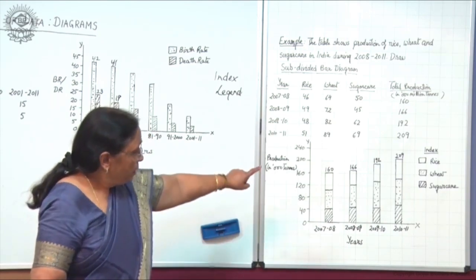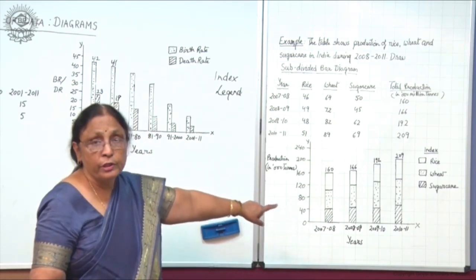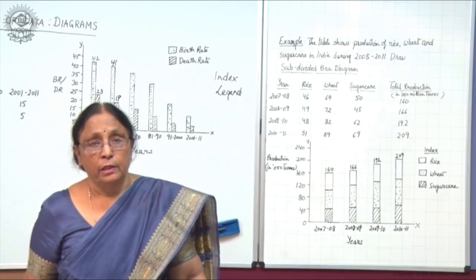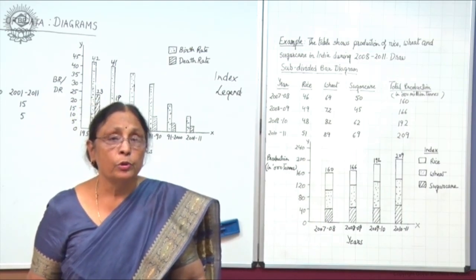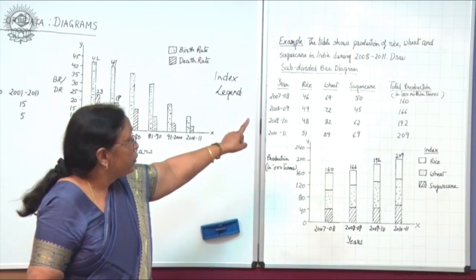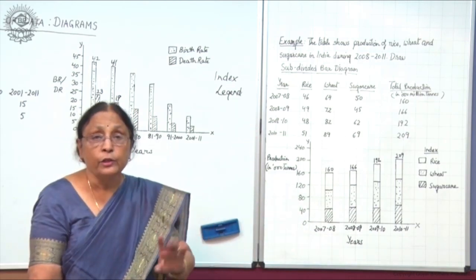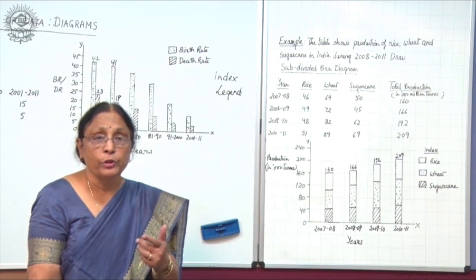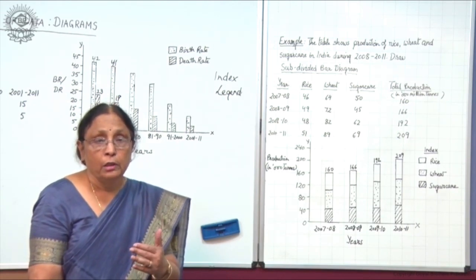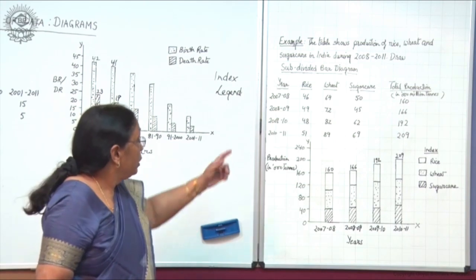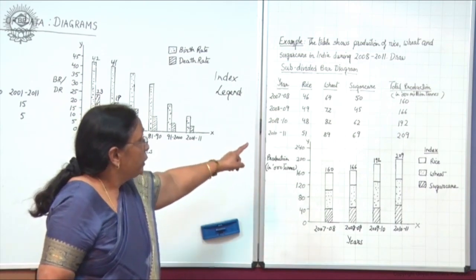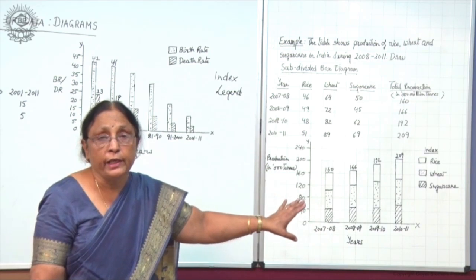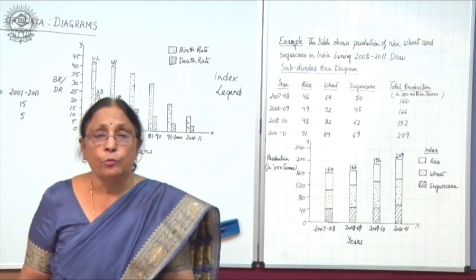For comparison we can take either distribution or the triple bar chart. But if you want to show the production of rice, wheat and sugarcane and also want to show the total, and what is the contribution of each crop out of that total production, then subdivided bar is more suitable.